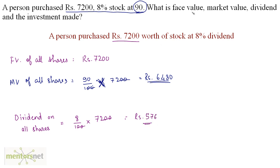Now let's answer each one of these terms asked in the question. What is the face value? The face value is 7200. What is the market value? Market value is 6480. The dividend we've just calculated, that's 576. And what is the investment made? That means what is the amount this person paid to buy the stock. Stock is always bought at the market price. The shares are always bought in the share market. So the amount invested is the market value of all the shares, and that's 6480.